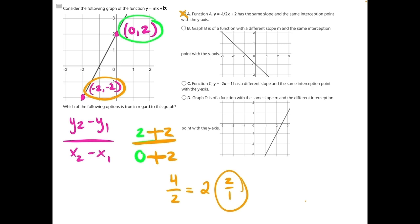Answer choice B says graph B is of a function with a different slope and the same interception point. Let's take a look at that same interception point. Here it's saying that we intercept the y-axis at y equals negative one, but here we intercept the y-axis at y equals positive two. So they don't have the same interception point, and that makes B incorrect.